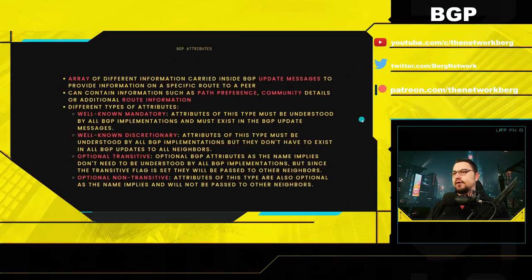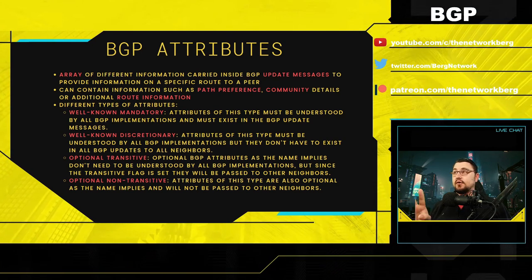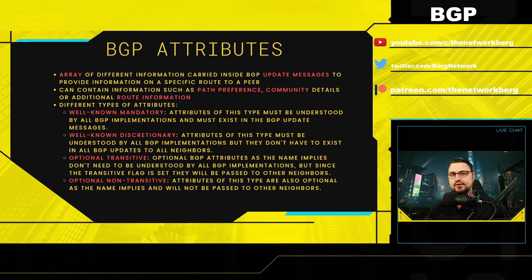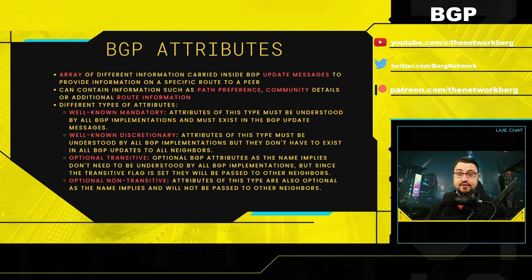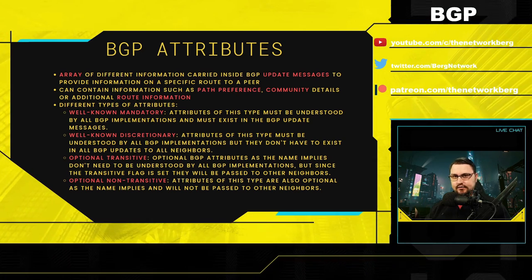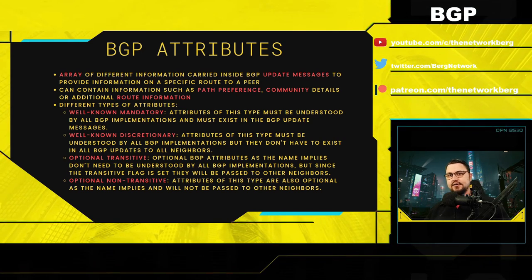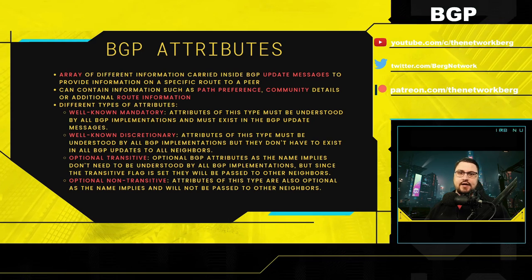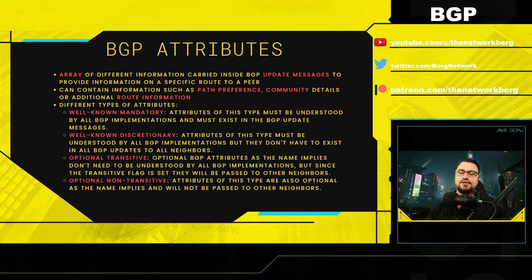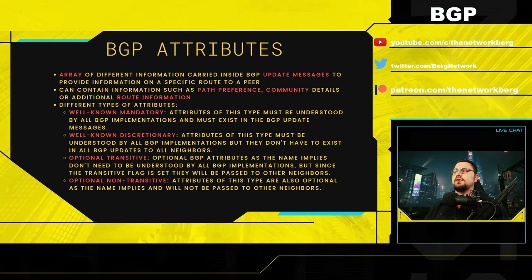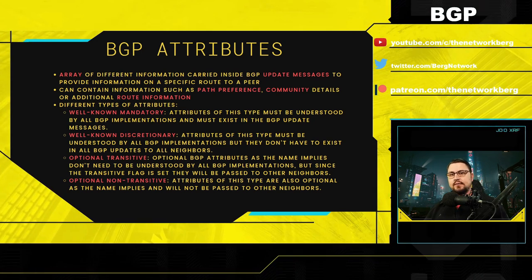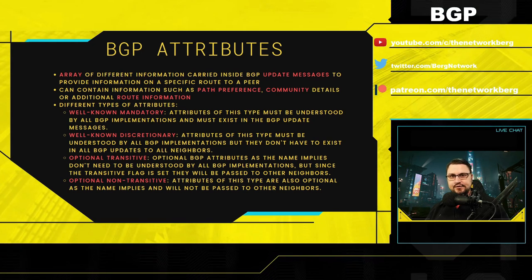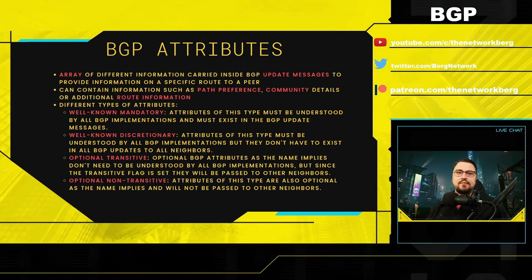Let's chat about BGP attributes and route filters. BGP attributes exist on all BGP systems, but some systems have different types of attributes you can specify. MikroTik and Cisco are kind of copy-and-paste on each other. BGP attributes are an array of different information stored in your update messages that tell a peer what is happening with a route. You can set specific values to change path preference, distances, or community details.